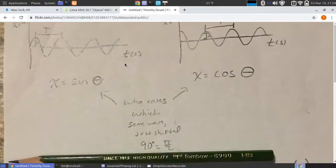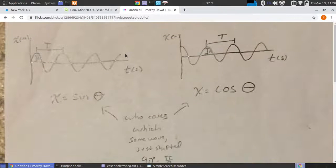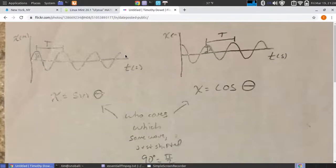We need angle as the argument of these functions, so somehow we have to convert time into radians or degrees. We're going to use radians.